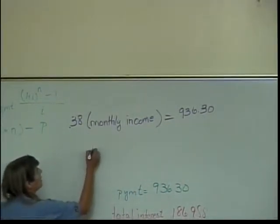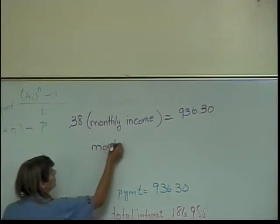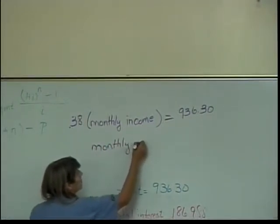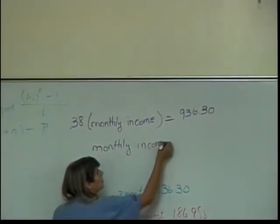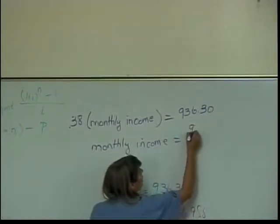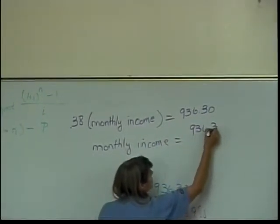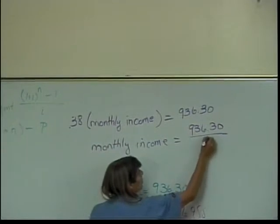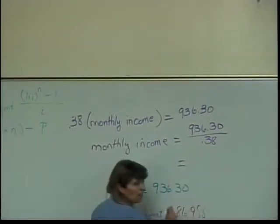Divide by .38, so I'll have monthly income is going to equal $936.30 divided by .38, which comes out to be